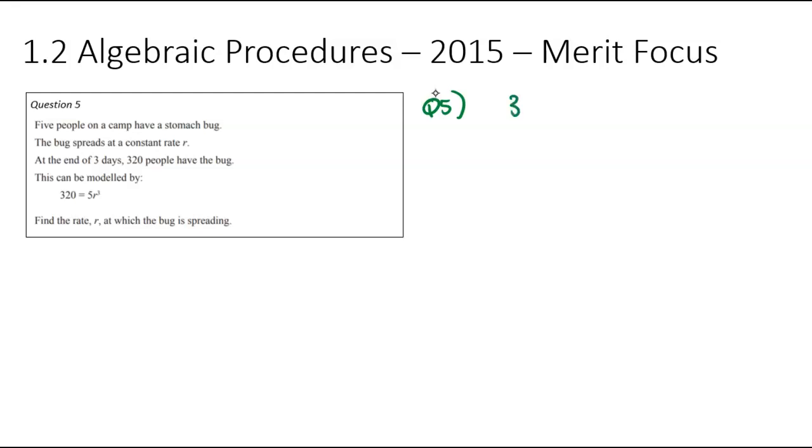So I'm going to start by dividing by 5, dividing by 5. So that gets me to 64 equals r³. Just a reminder, we don't have calculators in this exam. So hopefully you're good with your division. Feel free to use long division strategies to help you through that. To get rid of the cube, I'm going to do a cube root. So r is going to be equal to the cube root of 64.